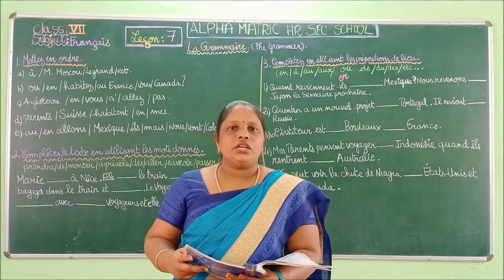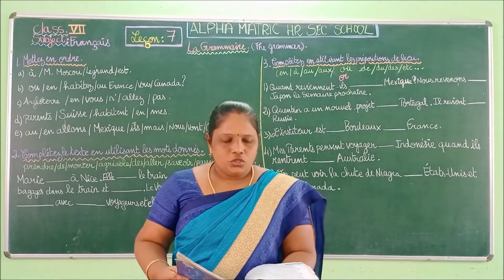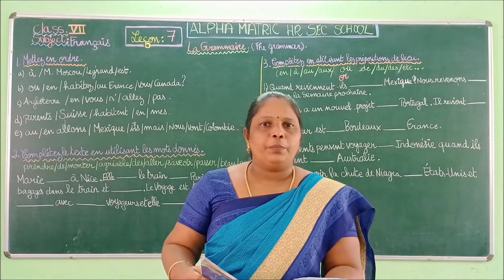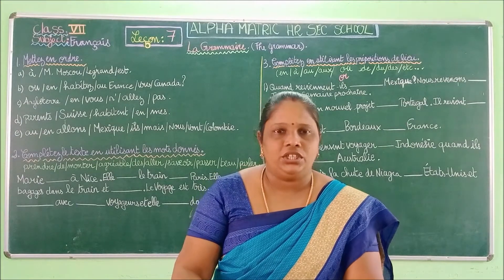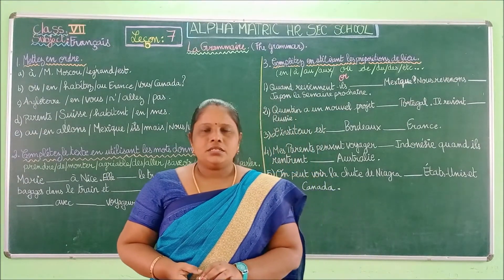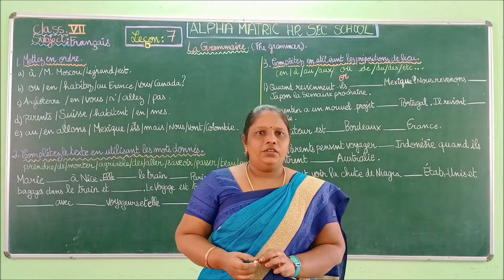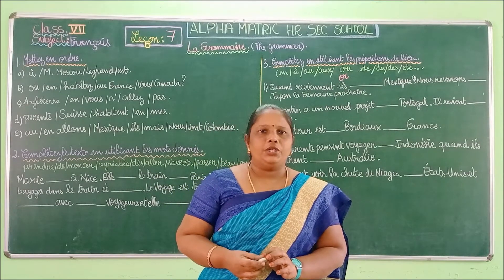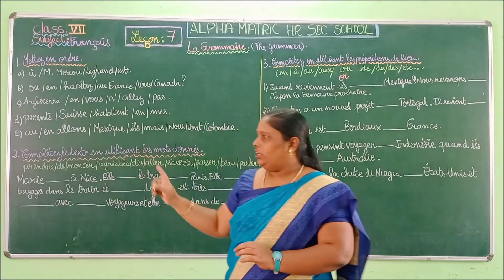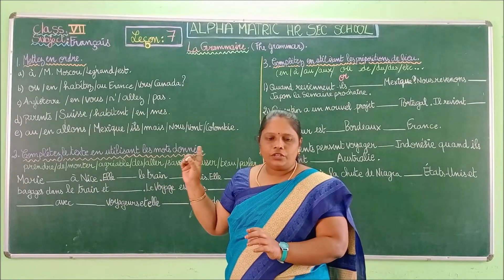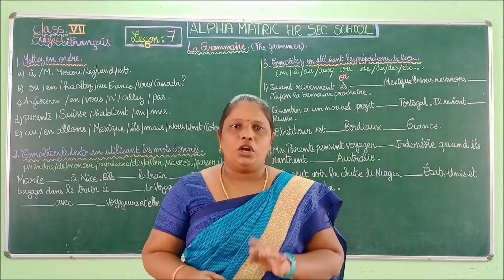We are going to see the remaining exercises of the grammar of lesson number 7. Open your book to page number 62. You have exercises number 3, 4, 5, 6, 7, and 8. I already gave you exercise number 1 and 2. We are going to do exercises 3 and 4 together. I will explain here and we are going to do it in the book.